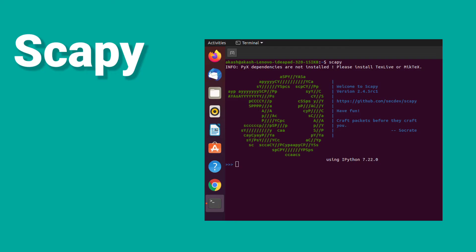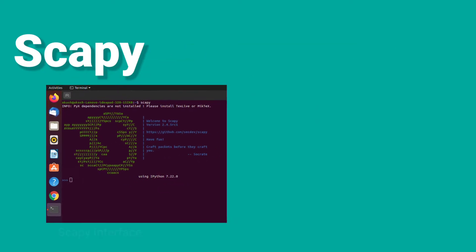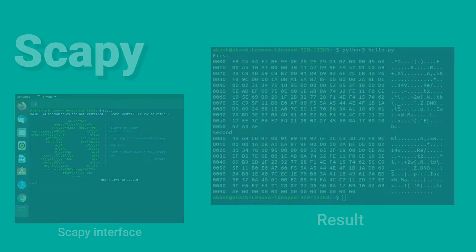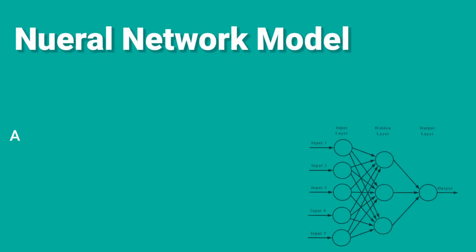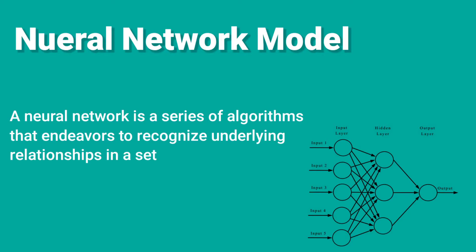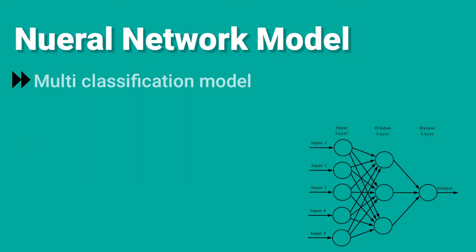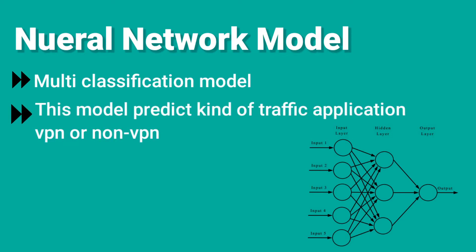The implementation uses SCAPI. We have used SCAPI as the main tool to modify packets in the preprocessing stage. The neural network model that we have proposed is a series of algorithms that endeavours to recognize underlying relationships in a set of data through a process that mimics the way the human brain operates. The model is a multi-classification model that predicts the kind of traffic — application, VPN, or non-VPN — using a convolutional neural network and recurrent neural network. The model detects patterns from data packets and predicts new packets into different classes.